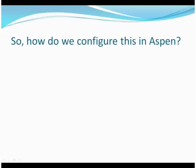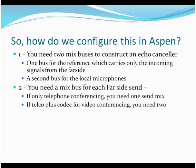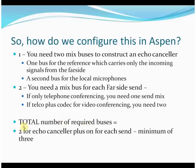So how do we configure this in Aspen? First, you need two mix buses to construct the Echo Canceler: one is the reference bus, which carries only the incoming signals from the far side, and the second is your local microphones — the local mix. Two, you need a mix bus for each far side send. If only teleconferencing, you just need one send mix. But if you're doing a telephone and a codec, you'll need two more, for a total of two buses for the Echo Canceler plus one mix for each send — a minimum of three. Every time you add an outside destination, you add another to that count.